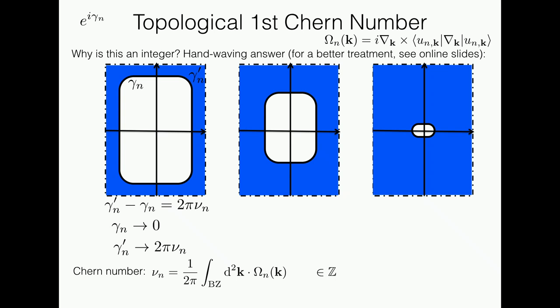The fact that it's an integer is key, because an integer cannot be changed by small deformations. The only way you can change the integer is by doing something drastic to the system — in this case closing the band gap and then reopening it to change the Chern number. That's what we mean by the robustness of this topological invariant. You can also see this is a global property, because we had to integrate the local Berry curvature over the whole Brillouin zone.